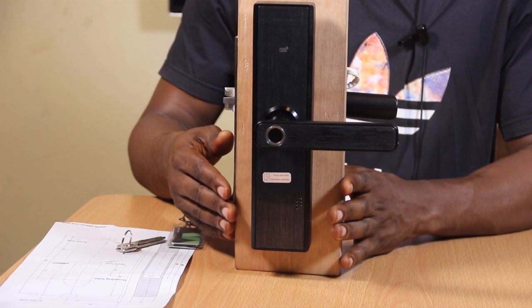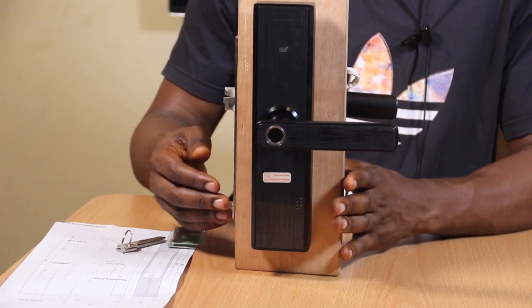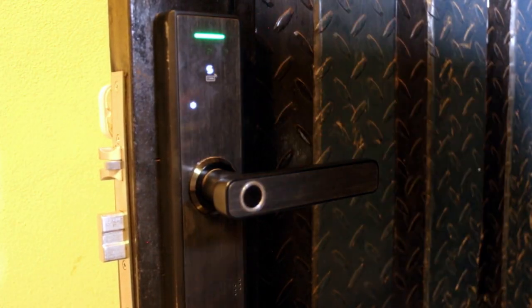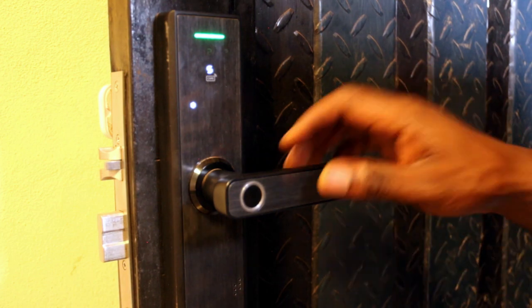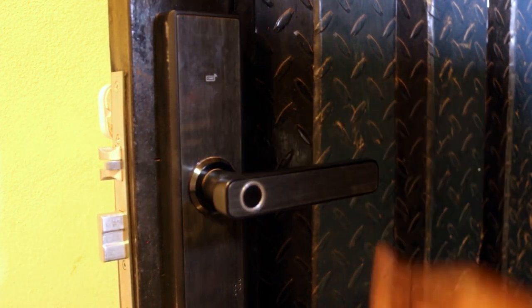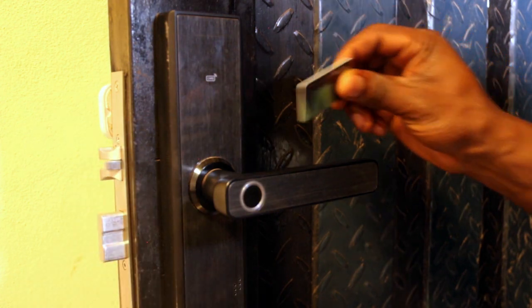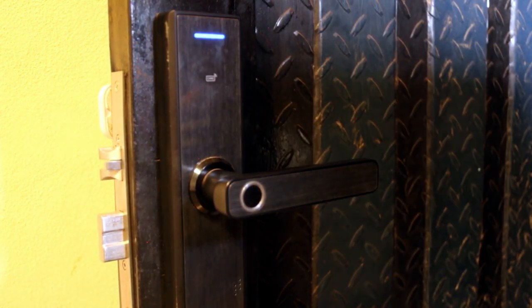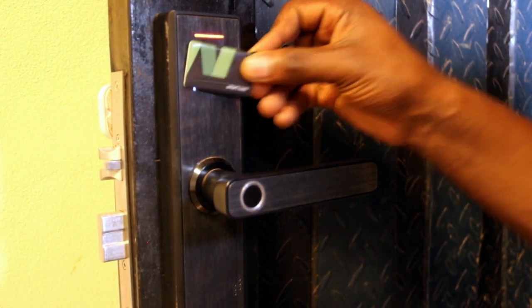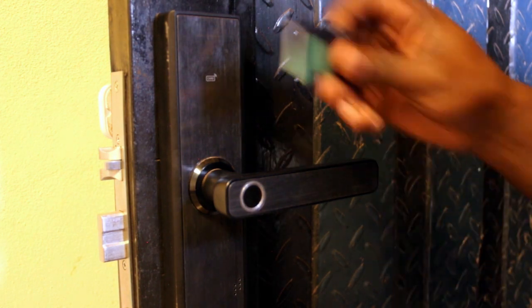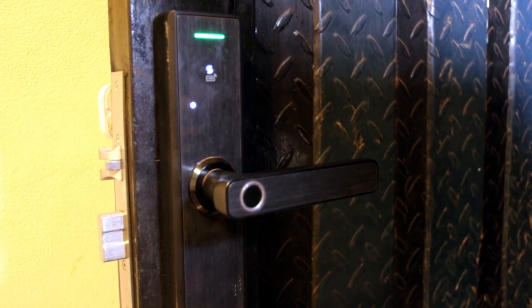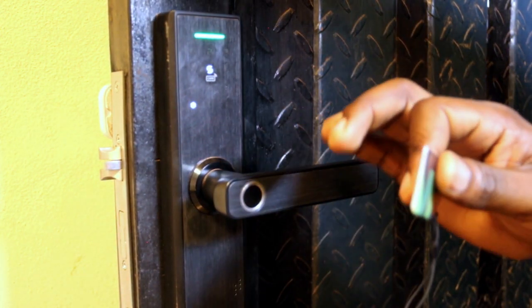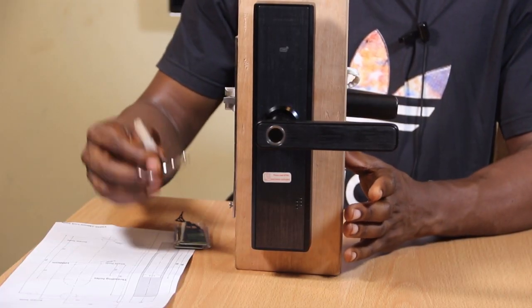For example, someone can pick up on your combination code, but you can have multiple access methods. That means you use the fingerprint plus the code to open, so just the code would not be able to open the door lock. Or you use the fingerprint and the mechanical key - if you use that combination and someone uses just the mechanical key, they won't be able to open unless they have the combination.